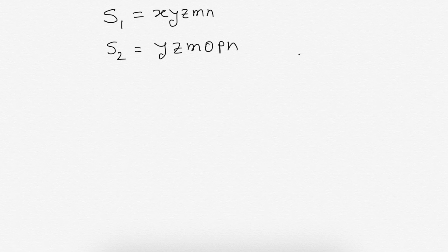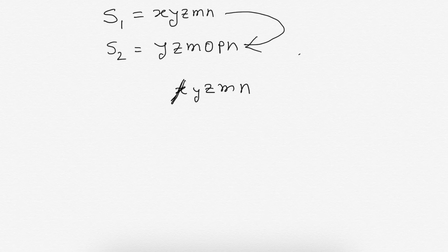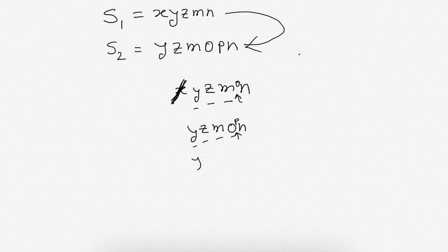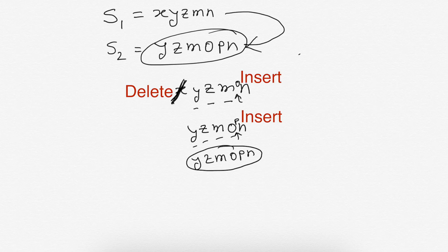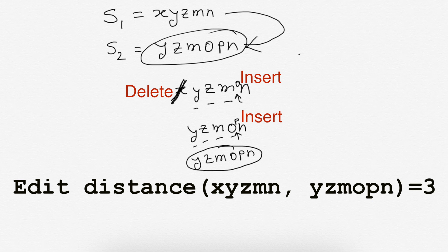Let us try to convert S1 to S2. We have S1 equals XYZMN. Delete X from S1 — S1 is now YZMN. Insert O in the fourth position — S1 now becomes YZMON. Insert P in the fifth position — S1 has become S2, which is YZMOPN. To convert S1 to S2, we needed three edits: one delete operation and two insertions. We cannot convert S1 to S2 with fewer than three edits. Therefore, the edit distance between XYZMN and YZMOPN is 3.